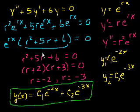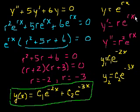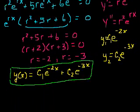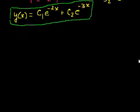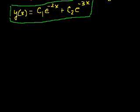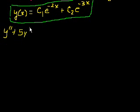But what if we don't want the general solution — we want to find the particular solution? Then we need initial conditions. So let's work through this differential equation with some initial conditions. The equation is the second derivative plus 5 times the first derivative plus 6 times the function is equal to 0.